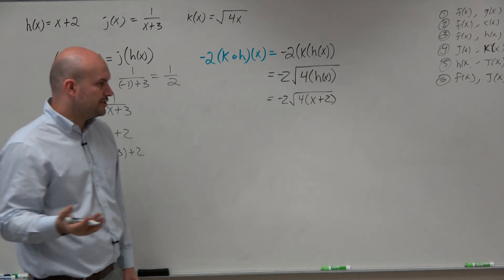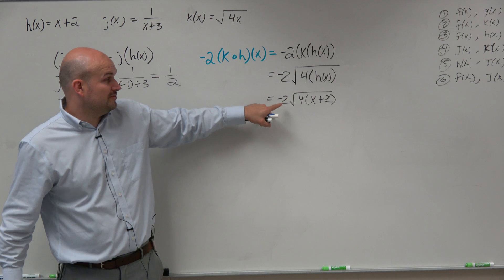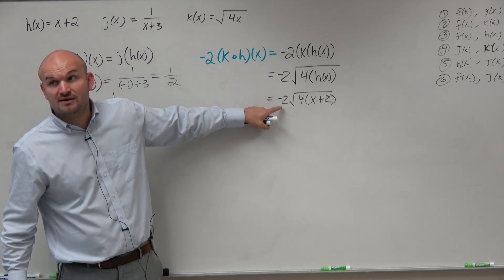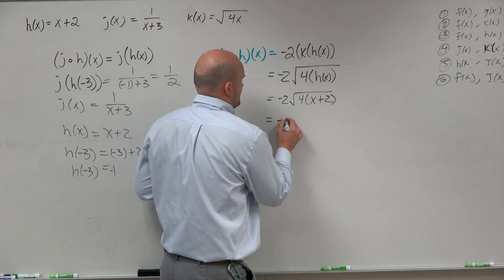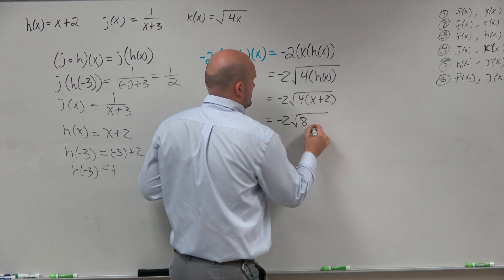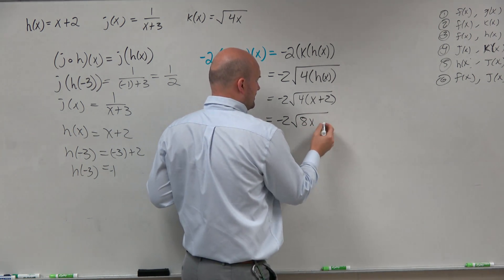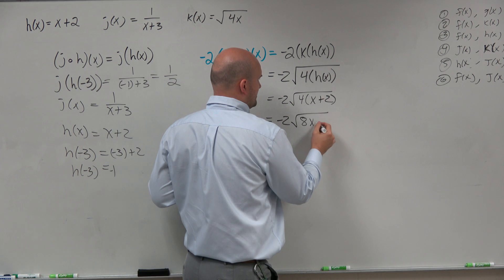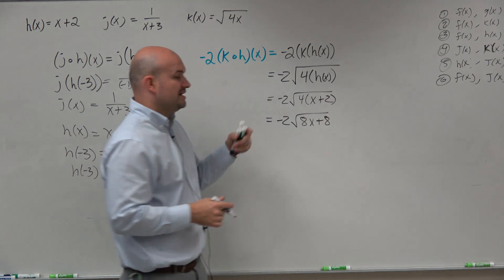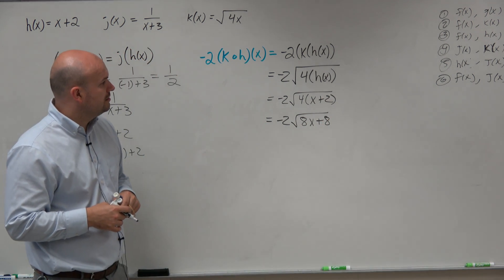Now we can simplify under a radical, that's fine. But remember, we can't multiply a number outside a radical inside a radical. That has to stay there. 8x plus 8. So that is our 4x.